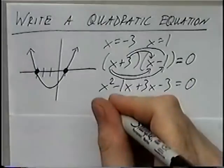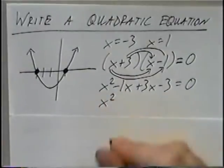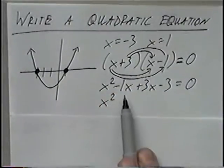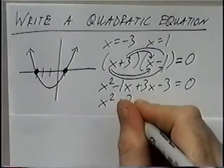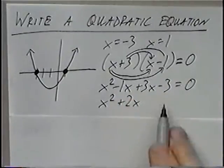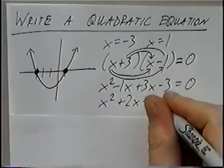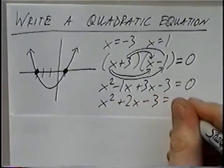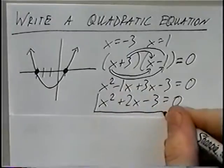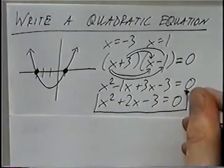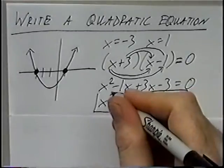Combining like terms, we'll have x squared. Negative 1x plus 3x would be 2x, minus 3 equals 0. And that will be our quadratic equation for the graph.